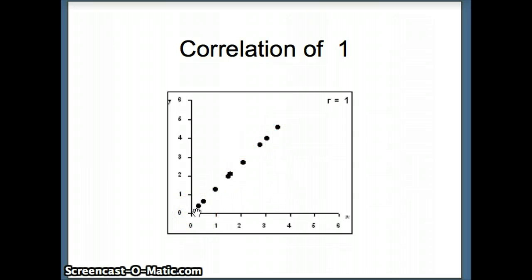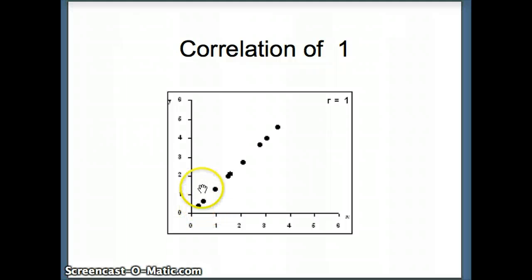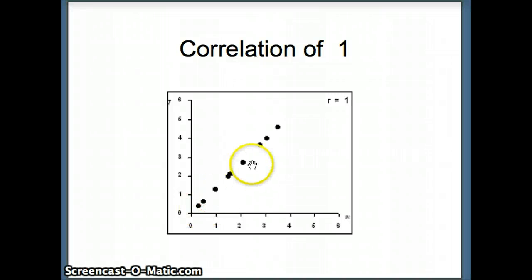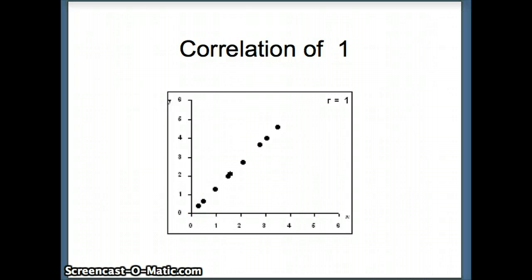Here is what a correlation of one looks like: all of the points lie on a straight line with a positive slope. It doesn't have to be this exact slope — it could be smaller or larger — but all points fall on that line. We have the independent variable on the x-axis and the dependent variable on the y-axis. All points lie on a perfect straight line with a positive slope, hence the correlation is positive one.